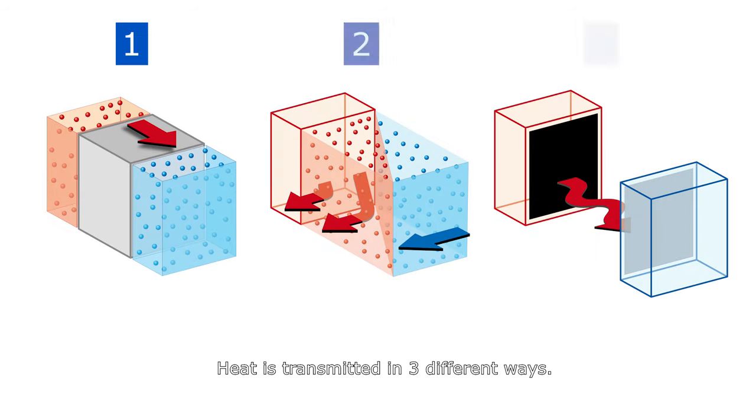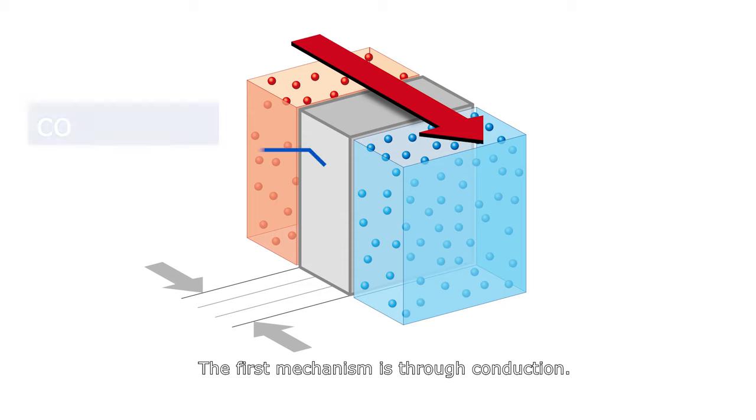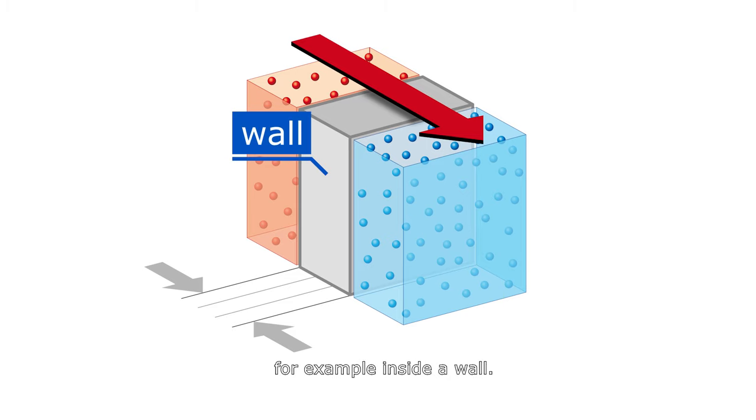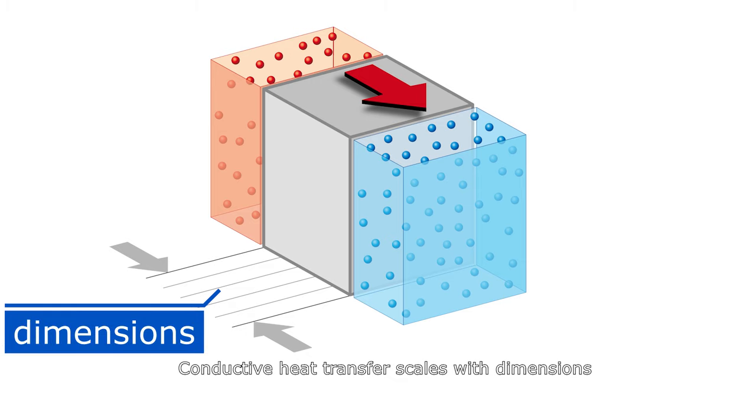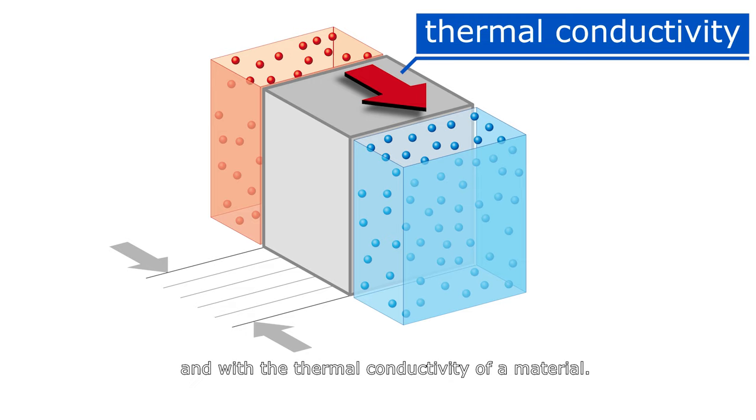Heat is transmitted in three different ways. The first mechanism is through conduction, through a solid or stationary fluid. For example, inside a wall. Conductive heat transfer scales with dimensions and with the thermal conductivity of a material.